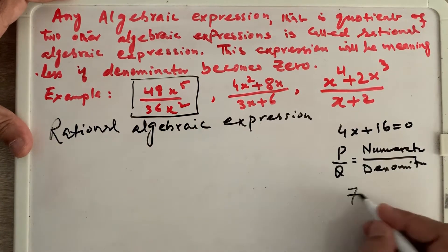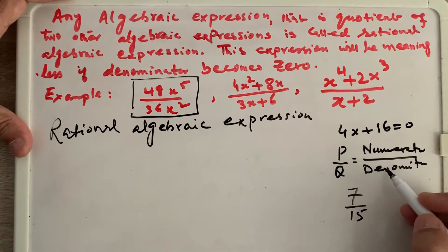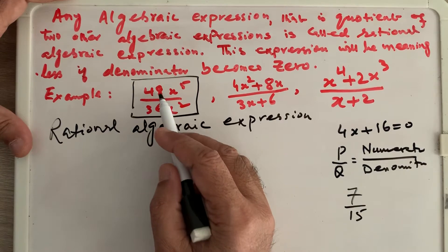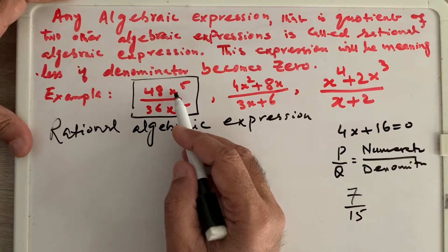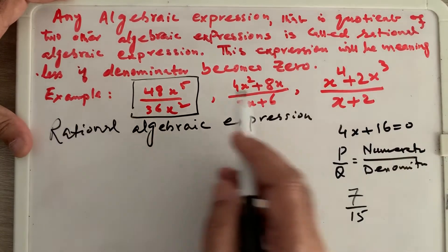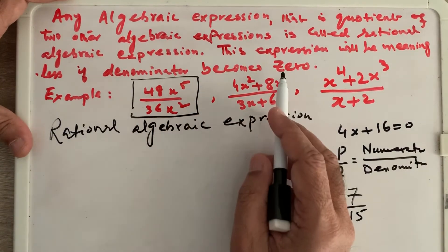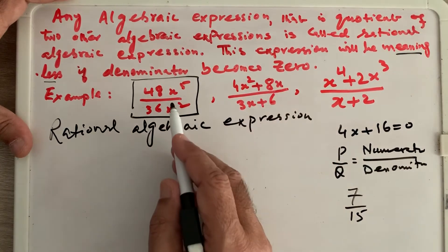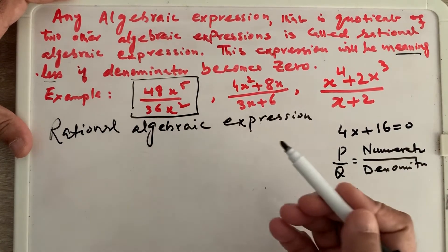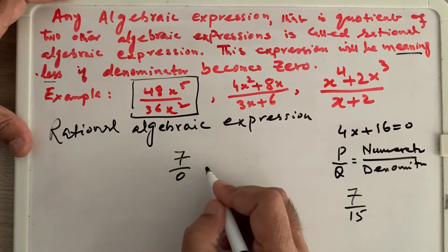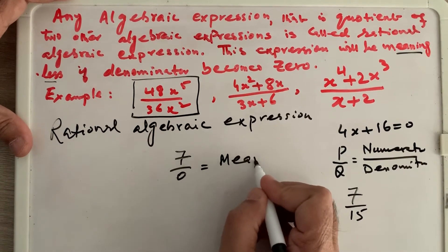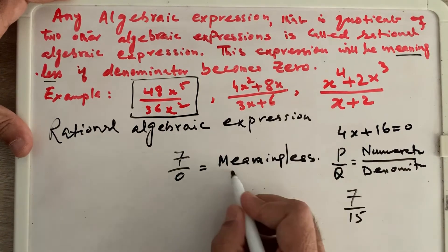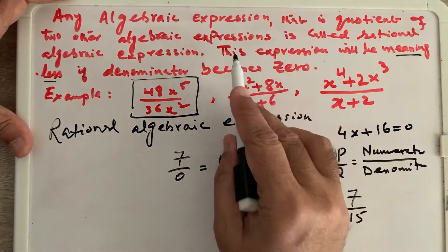Just like writing 7 over 15, we have a numerator and denominator. In math we use the p over q format, and in algebra we use constants and variables. This expression becomes meaningless if the denominator becomes zero — for example, 7 over 0 is meaningless. That is why the definition includes the restriction that the denominator should not be equal to zero.